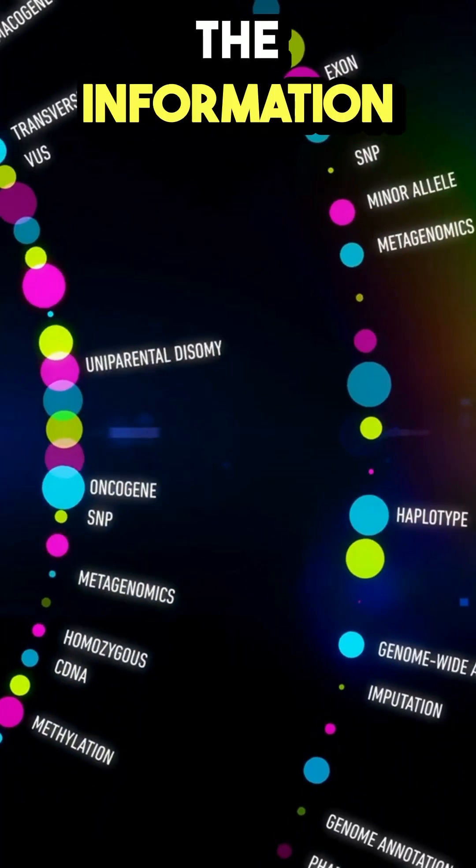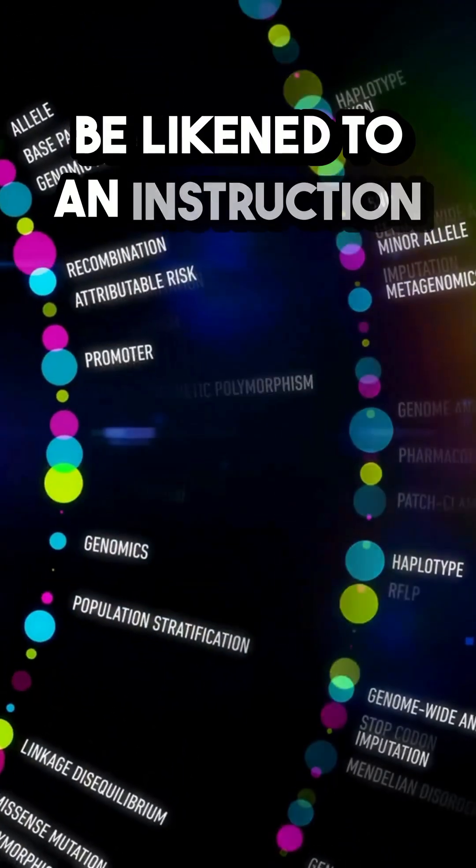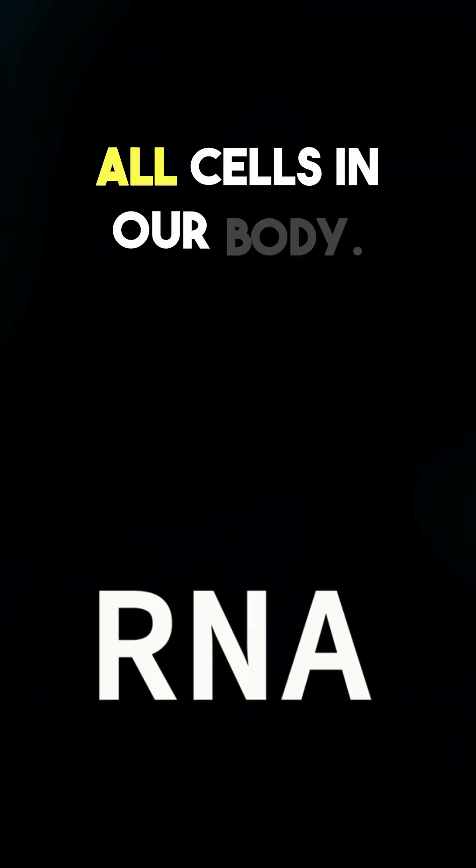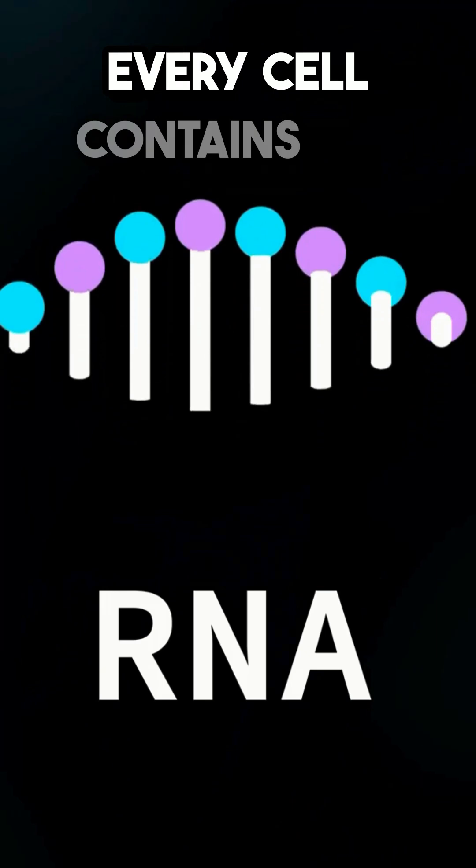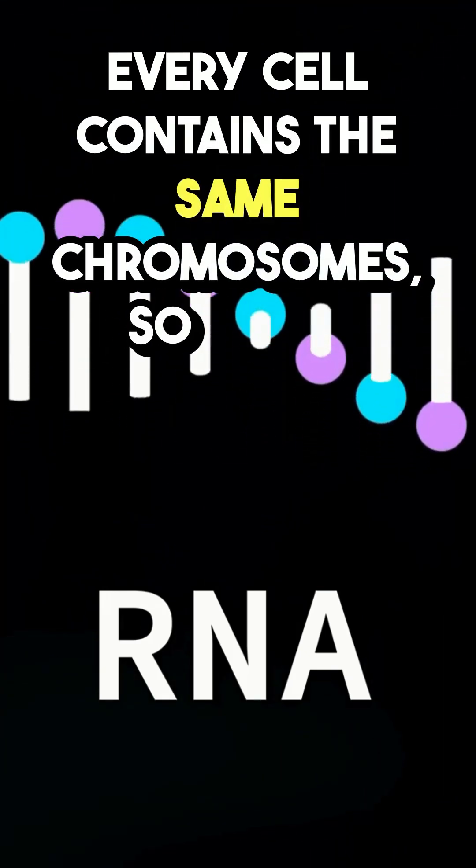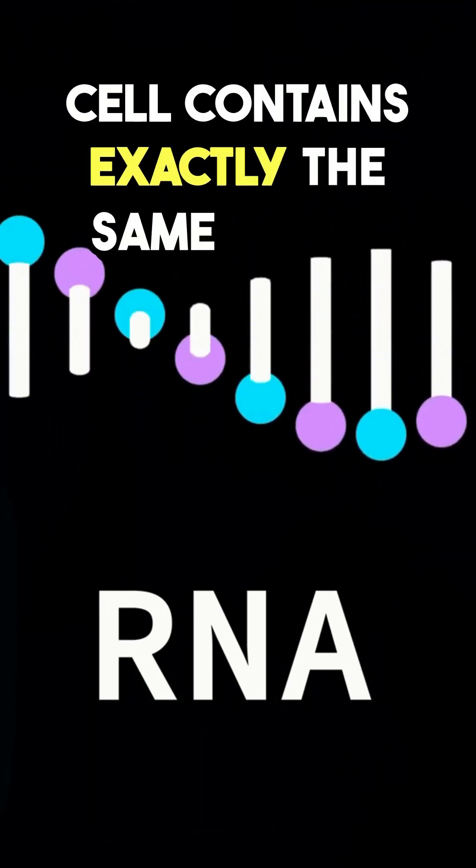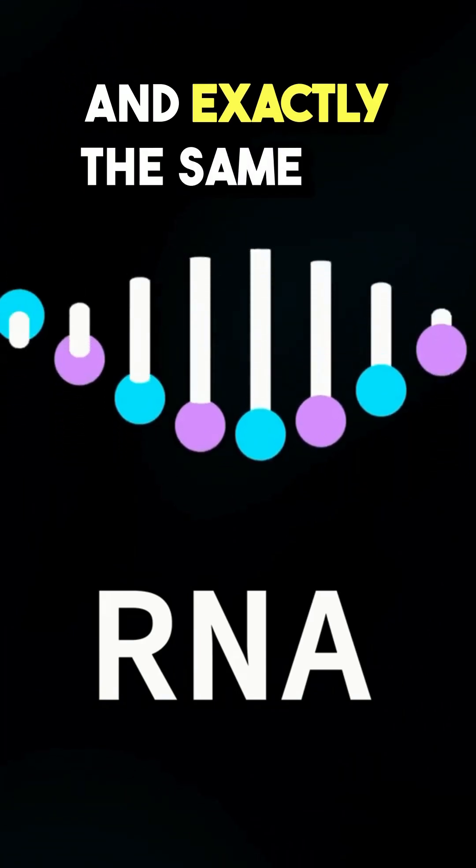The information stored within our chromosomes can be likened to an instruction manual for all cells in our body. Every cell contains the same chromosomes, so every cell contains exactly the same set of genes and exactly the same set of instructions.